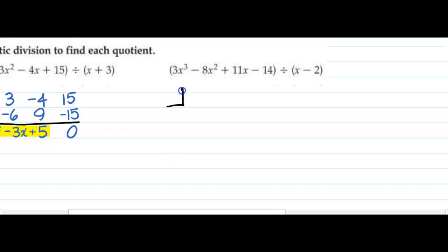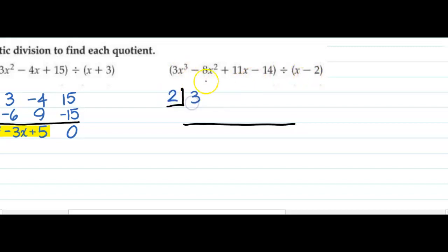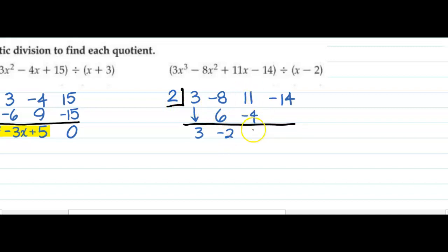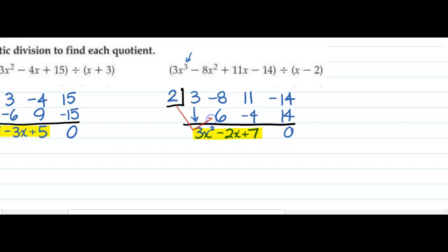Let's try one more. I'm going to put a 2 in the box. Write the coefficients: x cubed, x squared, x, constant. Bring down the 3. 2 times 3 is 6; combine, I get negative 2. 2 times negative 2 is negative 4; combine, I get 7. 2 times 7 is 14; combine, I get 0. If it's x cubed my answer starts x squared, then an x — that's a positive 7. That's my answer.